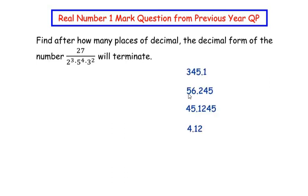Here four numbers are taken as examples. 345.1 represents one decimal place after the decimal point and it is called a terminating number because you do not see any number after one.